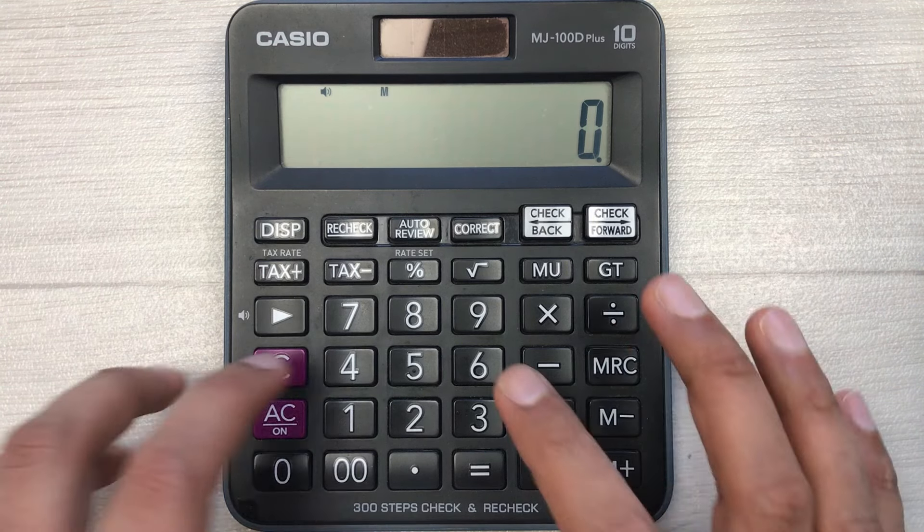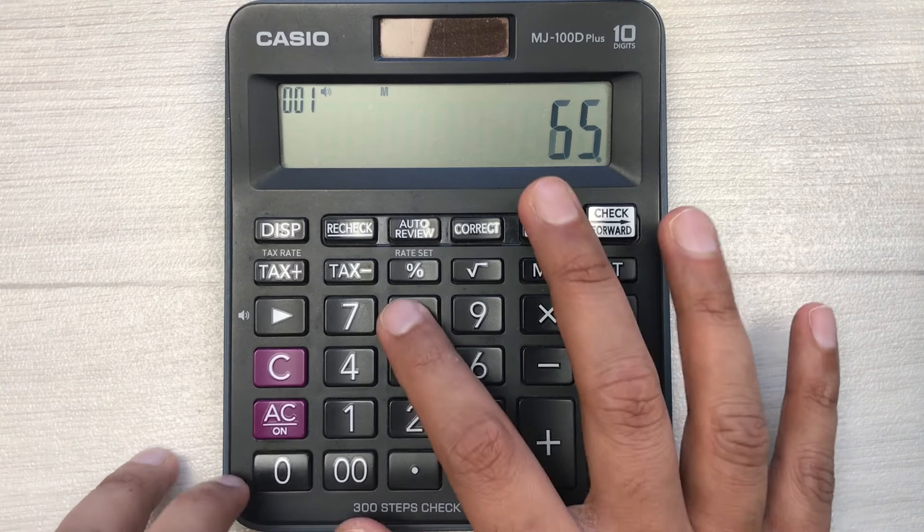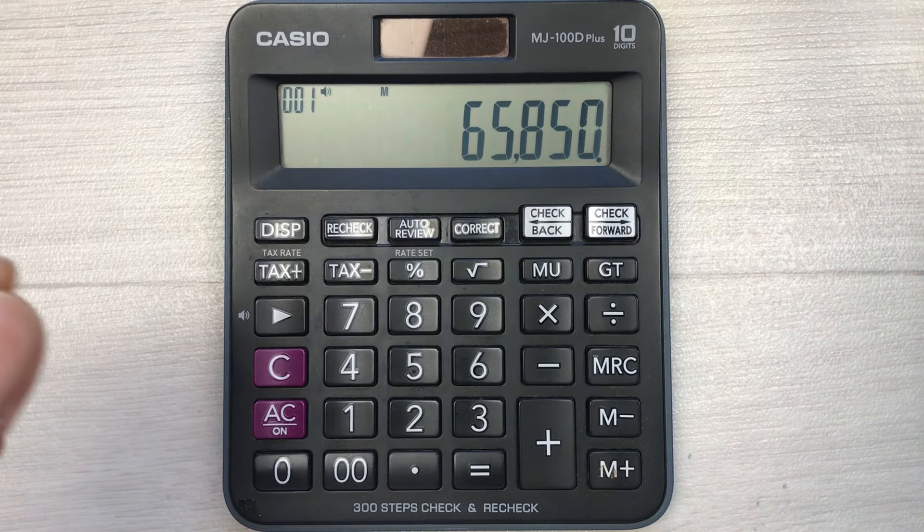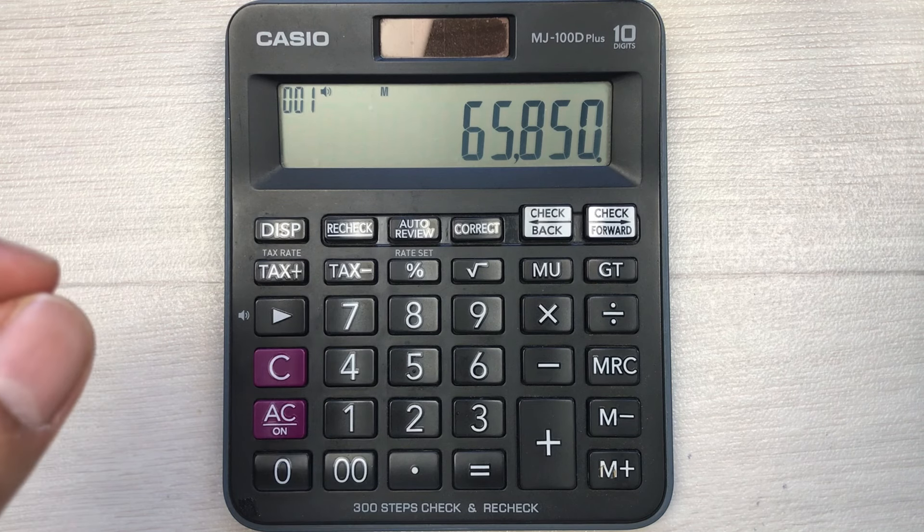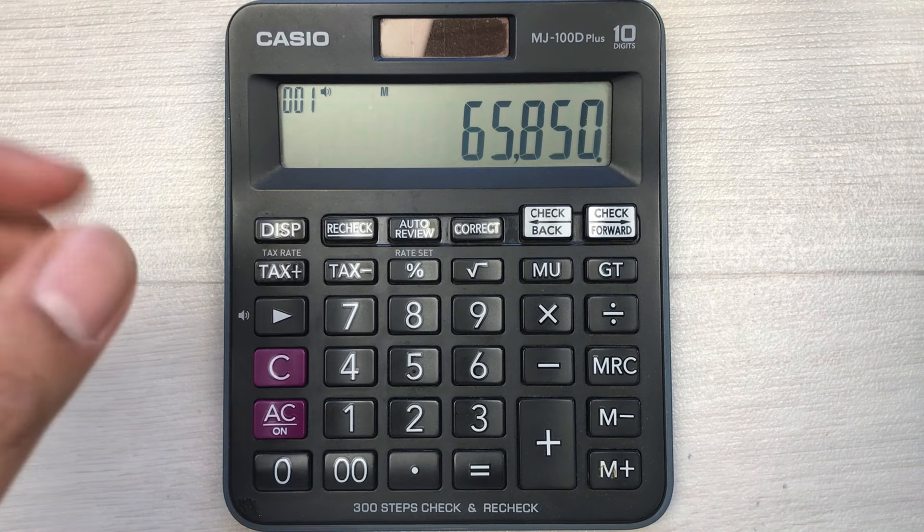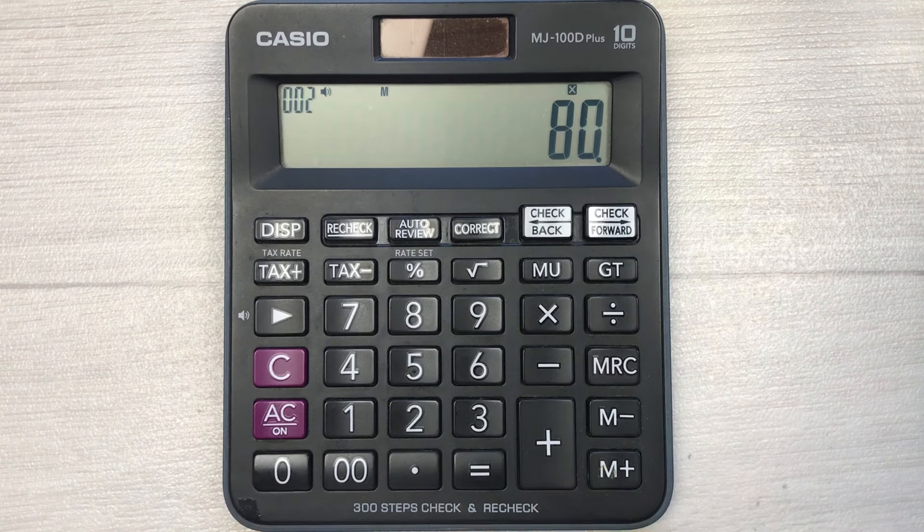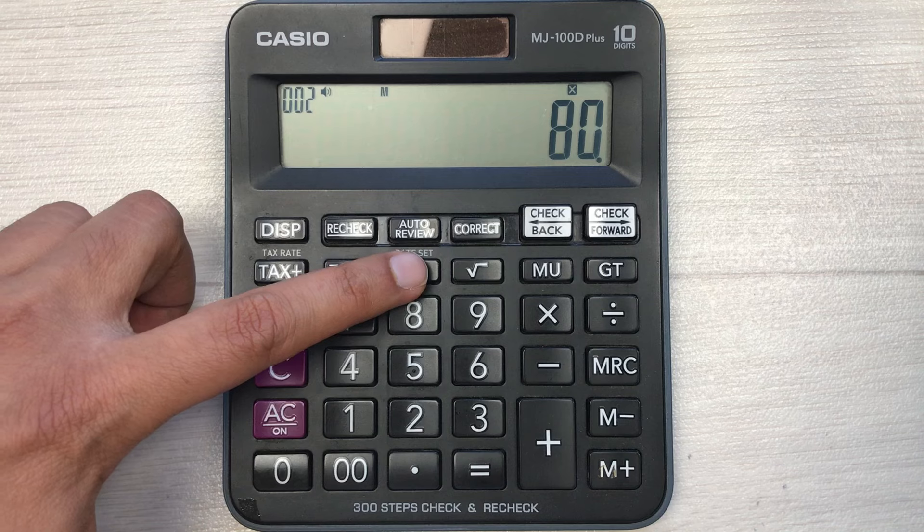Let's say the price of an item is $65,850 and you want to find out what will be the final price after 20% discount. Same thing, you have to multiply it with 80 and then press this percentage button.